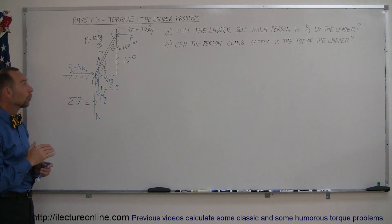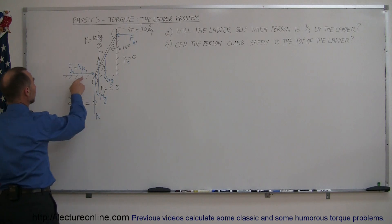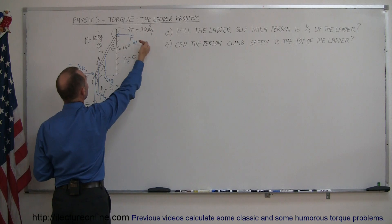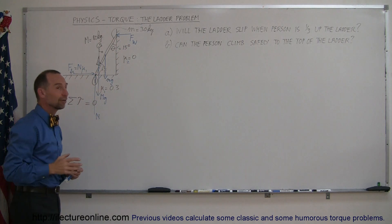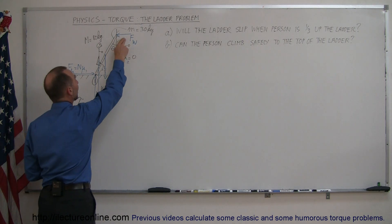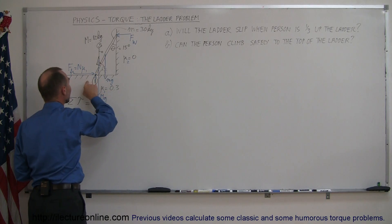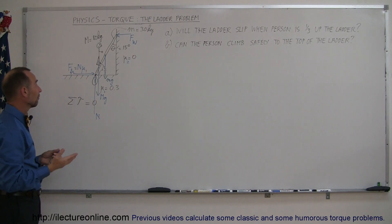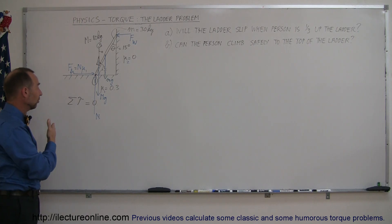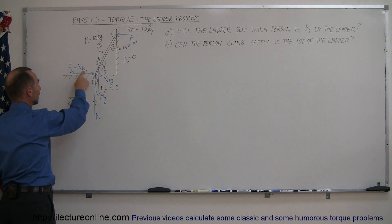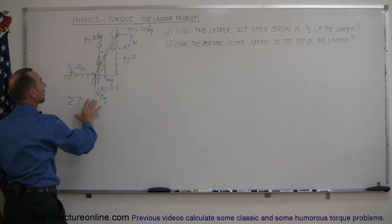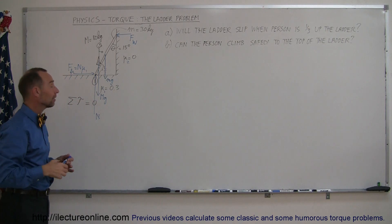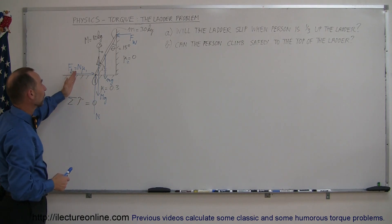We have two forces in the horizontal direction: the friction force pushing to the right, keeping the ladder from sliding, and the force of the wall pushing the other way. You can see that if the force of the wall is greater than the friction force, the ladder will begin to slide. So what we need to do is find the friction force by finding the normal force multiplied by mu, and then find the force of the wall against the ladder using the torque equation.